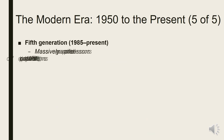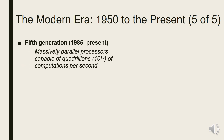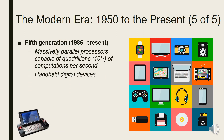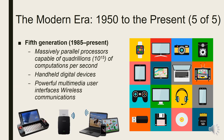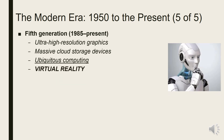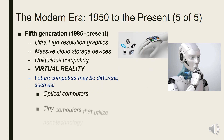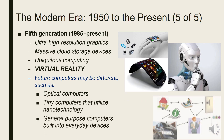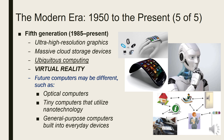The fifth generation of computers, from 1985 up to the present, uses massively parallel processors capable of quadrillions of computations per second. Computers are now available in different sizes with unique features like handheld digital devices, powerful multimedia interfaces, and wireless communications. Characteristics include ultra-high resolution graphics, massive cloud storage, ubiquitous computing, virtual reality, and AI such as robots and virtual assistants like Siri, Alexa, and Cortana. In the future, computers may include optical computers, nanotechnology-based tiny computers, and general-purpose computers built into everyday devices.